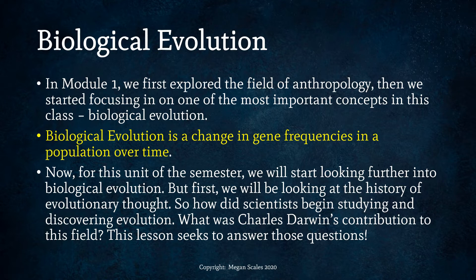In some ways we'll look at this through primatology, studying our closest living relatives. Later on we'll look at fossils — fossil hominins — to learn about human evolution. But first we need to look at the history of evolutionary thought and figure out how scientists discovered evolution and what Charles Darwin had to do with this.